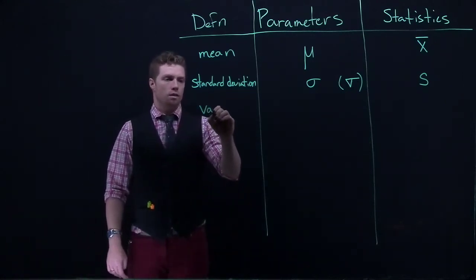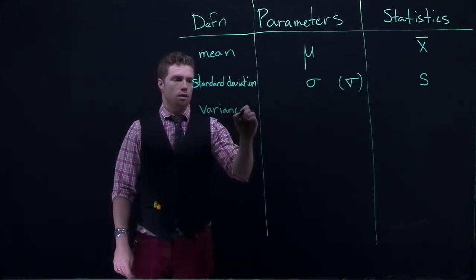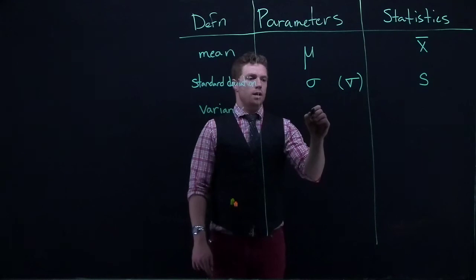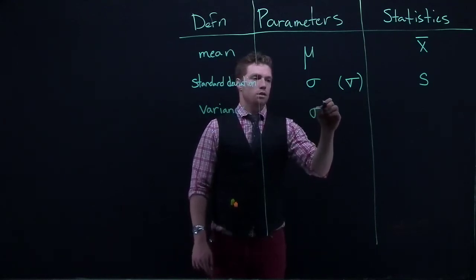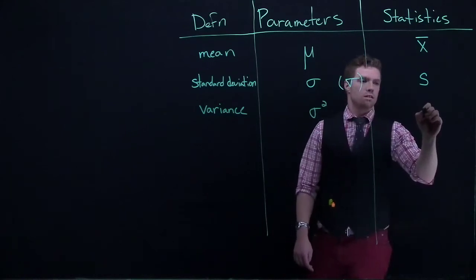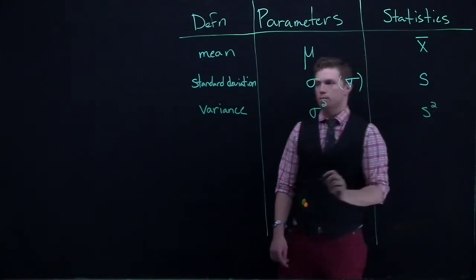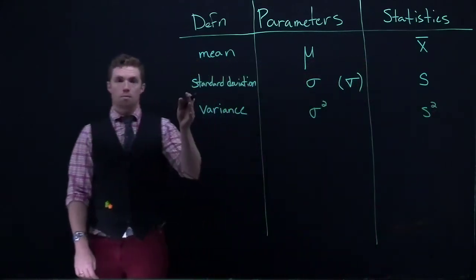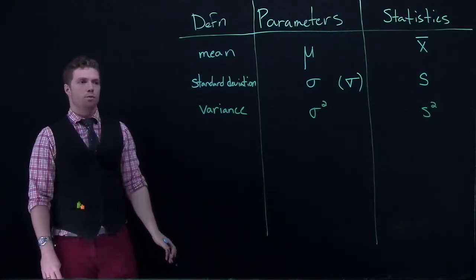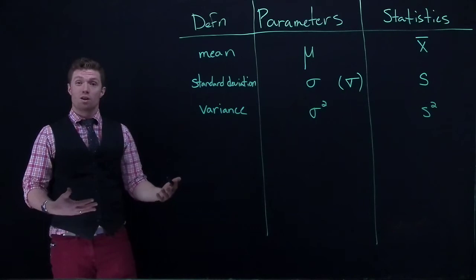Alright, next one. We've got variance. It's just another measurement of spread. And it is by definition sigma squared. And over here in our statistics, this is S squared. Alright, so these are our most basic statistics with regard to just simple numerical summaries.